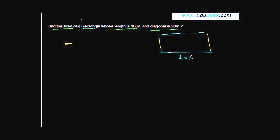What you are told is that the length of the rectangle is equal to 16 meters, and the diagonal is 20 meters. So let's call this diagonal d, equal to 20 meters. We do not know what is the breadth of the rectangle.